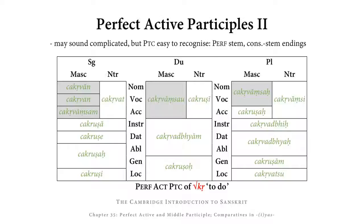In the dual, we have the forms CHAKRWADBHYAM and CHAKRUSHAH. In the case of instrumental, dative, and ablative, the suffix appears as WAD in front of the ending BYAM, which begins with a consonant. In front of voiced consonants, the weak suffix ends in a voiced consonant D. So: CHAKR, WAD, BYAM. In the genitive and locative dual, the ending OH begins with a vowel, so the weak suffix appears as USH, giving CHAKRUSHAH.